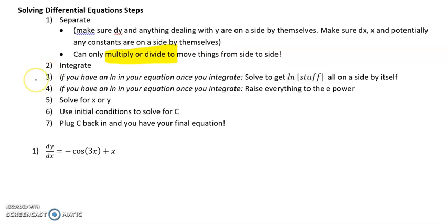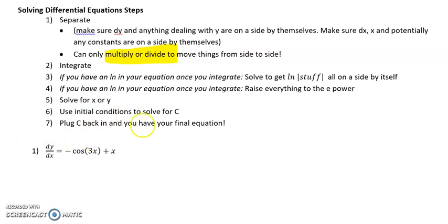Three and four are optional — only if your function has an ln in it. Step five is, after you integrate, you're going to solve for x or y, or whatever you want to solve for. And then steps six and seven — we'll use whatever our initial conditions are to solve for c. And then for step seven, we'll plug c back in, and voilà, we've got our final answer.